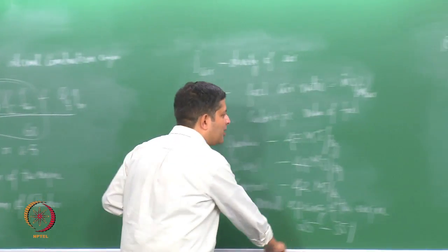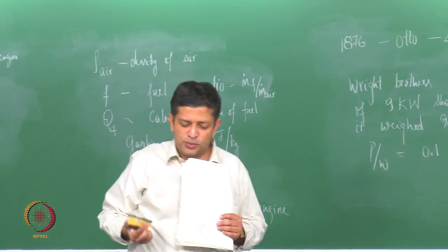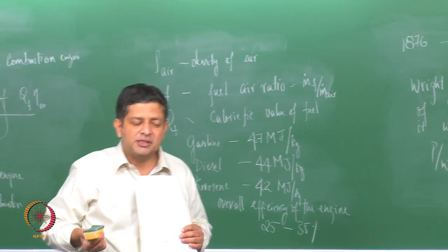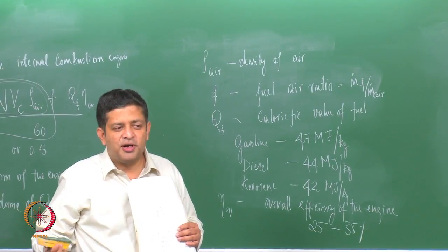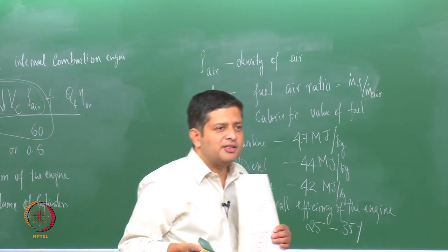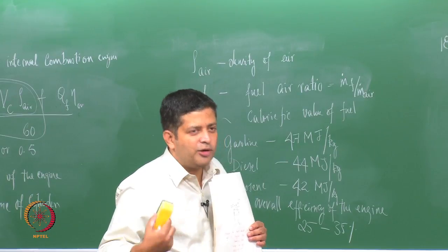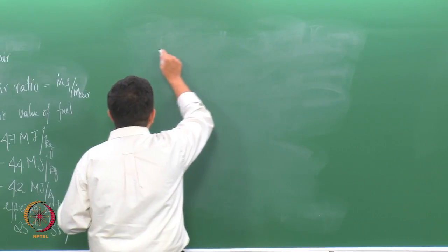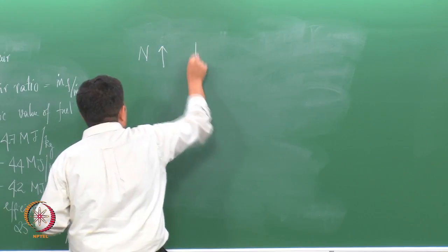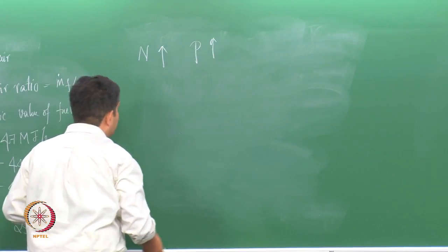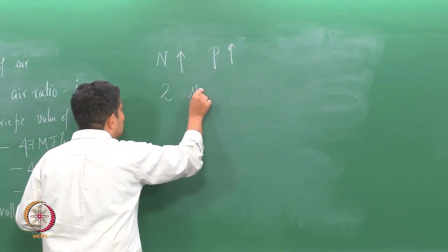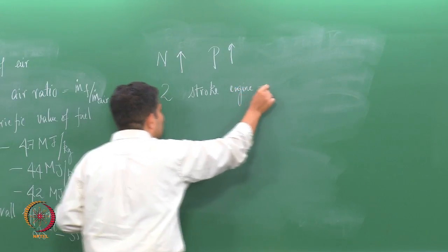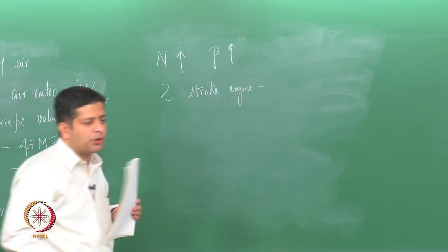For example, in India we had Bullet motorcycles which used to run at somewhere around 4000 to 5000 RPM — very low RPM engines — whereas some of the more recent high performance bikes run somewhere close to 8000 to 9000 RPM. So when you increase the RPM, you have higher power. Also, a two-stroke engine is better than a four-stroke engine in terms of power output.